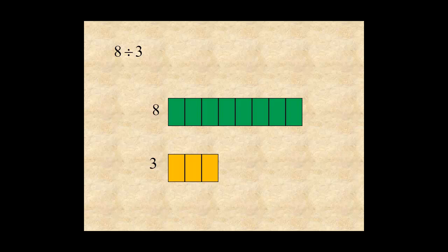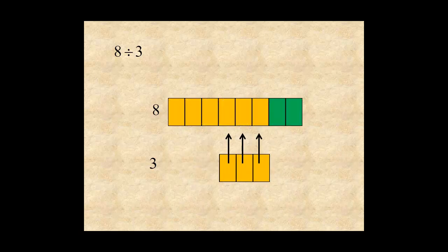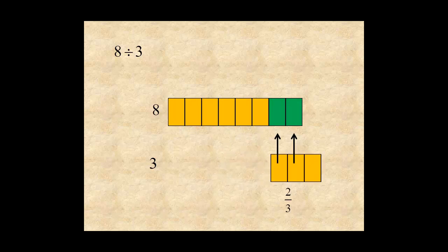Three fits into eight once, twice, with two units left over. Notice that two parts of three fit into what's left over. So we say three fits into eight, two and two-thirds times.